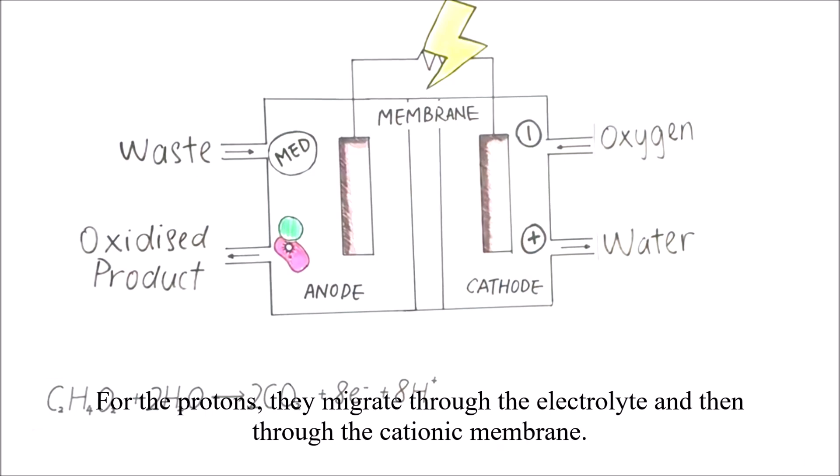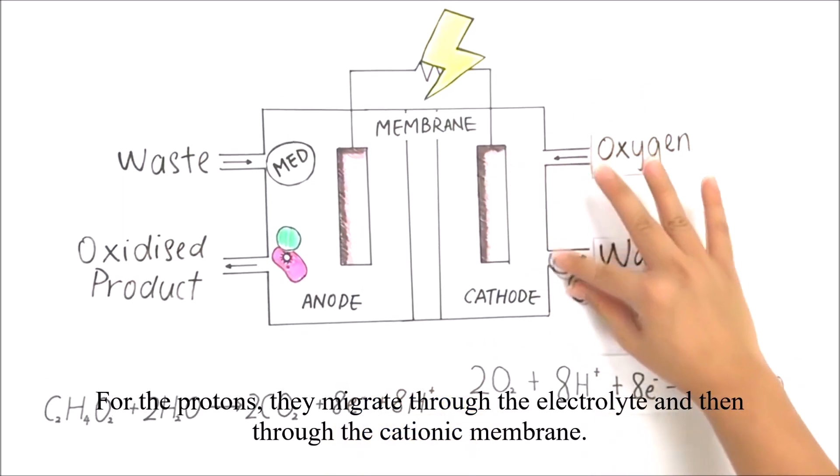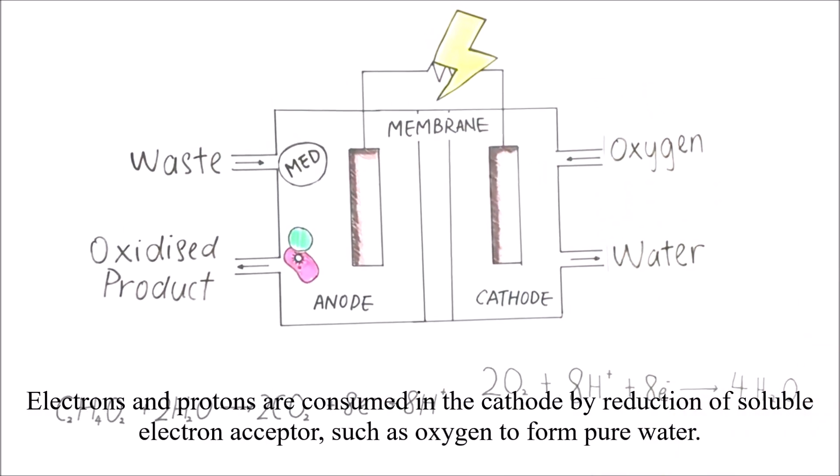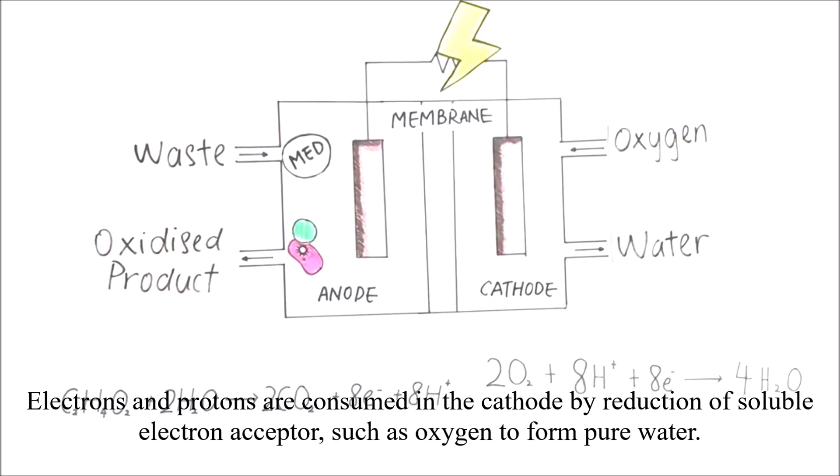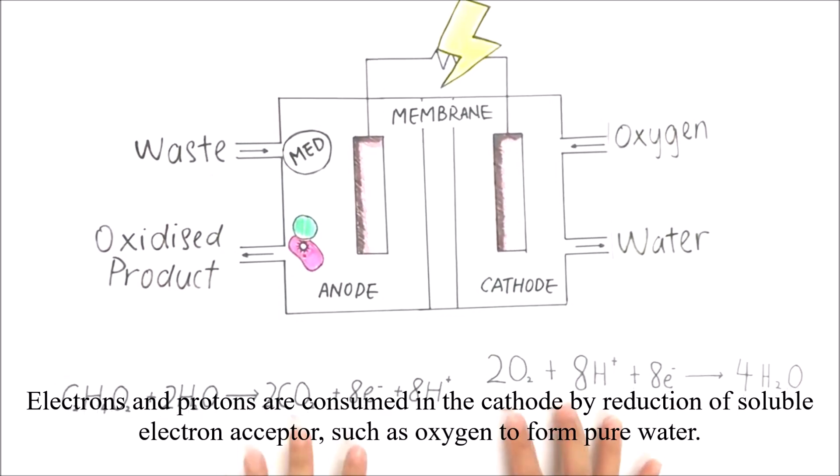For the protons, they migrate through the electrolyte and then through the cationic membrane. Electrons and protons are consumed in the cathode by reduction of soluble electron acceptor such as oxygen to form pure water.